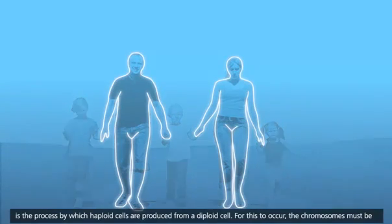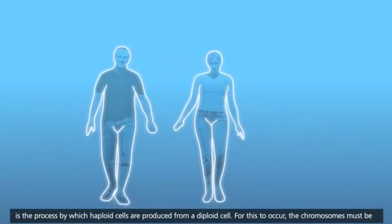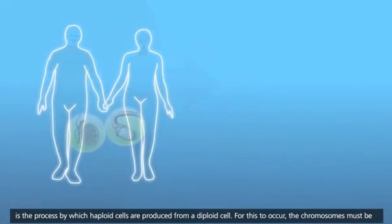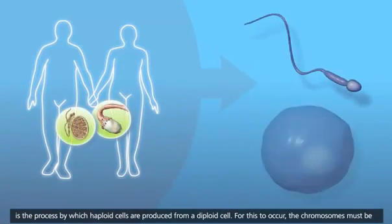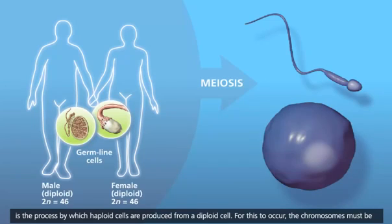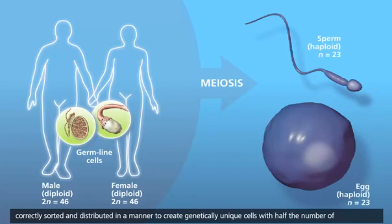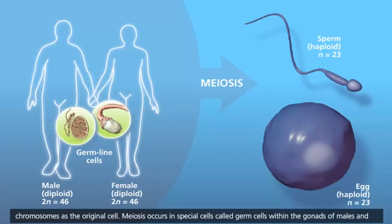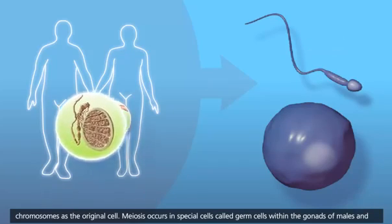Meiosis is the process by which haploid cells are produced from a diploid cell. For this to occur, the chromosomes must be correctly sorted and distributed in a manner to create genetically unique cells with half the number of chromosomes as the original cell.